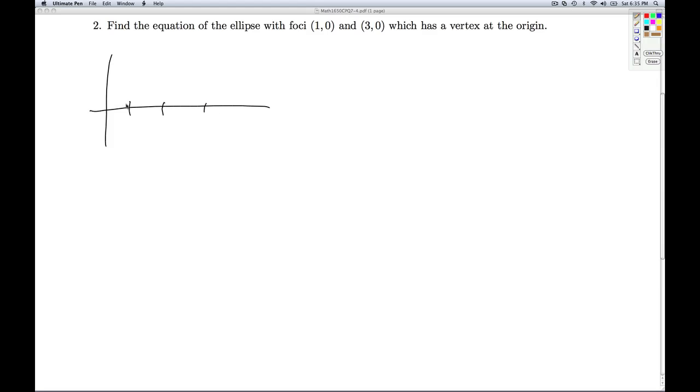So we've got a focus at (1, 0) and (3, 0), and we've got a vertex at the origin, (0, 0). So let's think back to our standard equation for an ellipse: (x - h)² / a² + (y - k)² / b² = 1. Let's see what we know about this ellipse straight away.